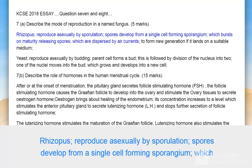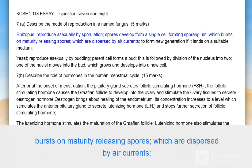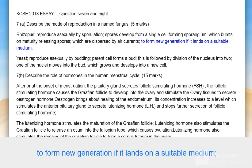Rhizopus reproduces asexually by sporulation. Spores develop from a single cell forming a sporangium, which bursts on maturity releasing spores. These are dispersed by air currents to form a new generation if they land on a suitable medium.